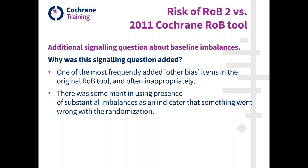In most cases it was somewhat inappropriate over-interpretation based on imbalance, where it really wasn't bias and it shouldn't have been there. So there was a strong drive that if people are going to be using this, we need to set some guidelines for in which cases it might actually be useful. And that leads us to the second reason: there is in fact some merit in using the presence of substantial imbalances as an indicator that something might have gone wrong with the process of randomization.